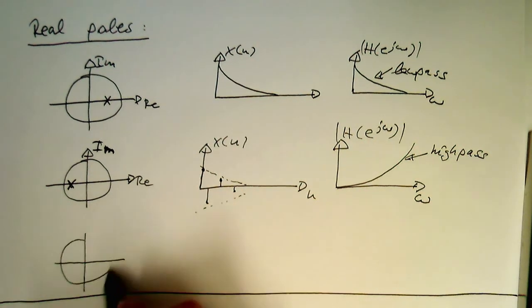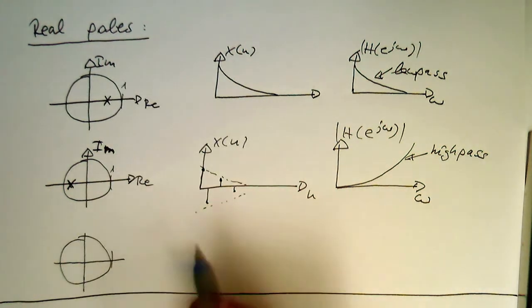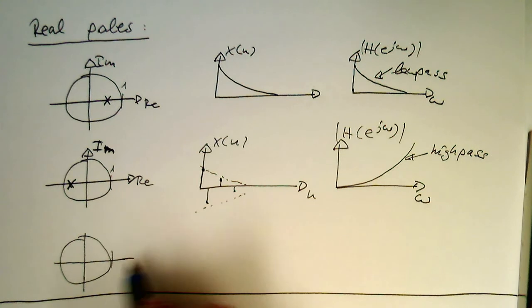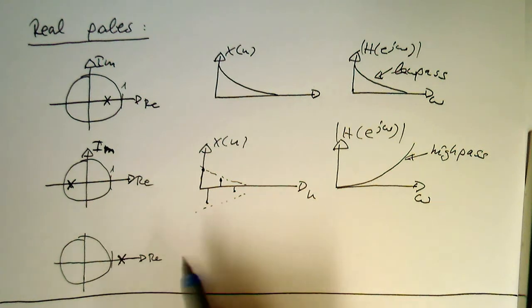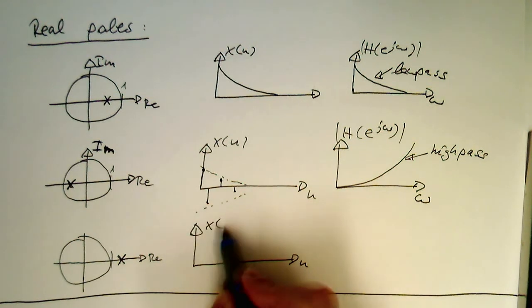So if you have the unit circle here, so if the pole is sitting here, so it's our real value, if the pole is sitting here then obviously the output X of n is unstable because it's outside of the unit circle, so we are getting something like that.